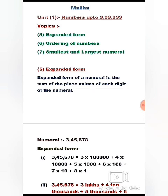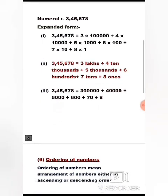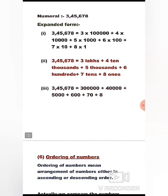Expanded form of a number is the sum of the place values of each digit of the numeral. We can write the expanded form of a numeral in three different ways.